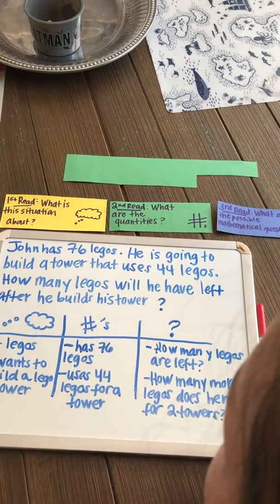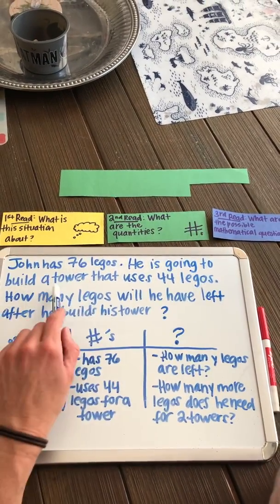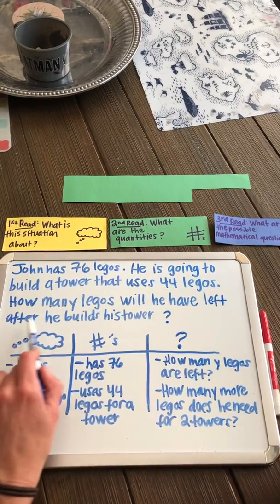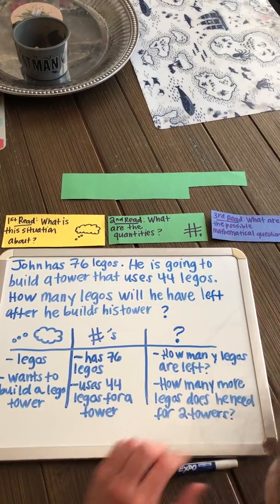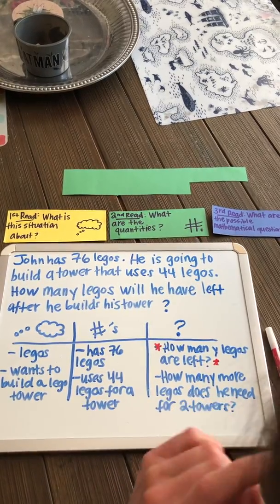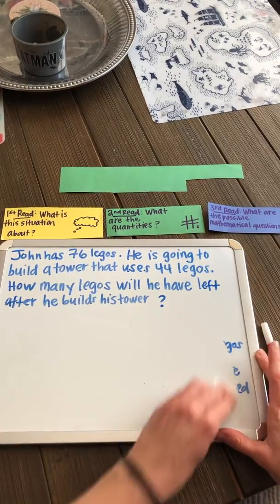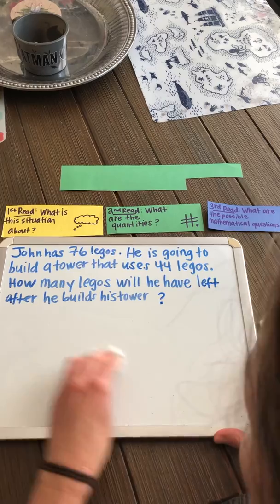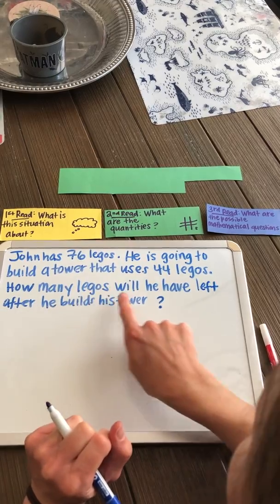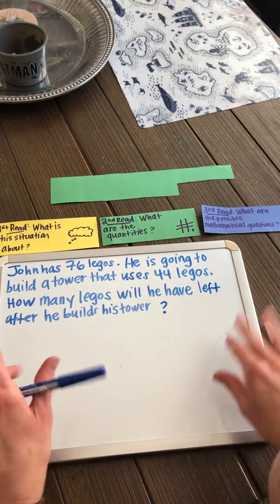I've uncovered the question, so let's read it again. John has 76 Legos. He is going to build a tower that uses 44 Legos. How many Legos will he have left after he builds his tower? I was thinking about that question already. I know I'm going to be adding or subtracting. Adding means to combine or join. Subtraction means to take away or compare. So I need to think about whether I'm combining Legos or taking away Legos to figure out how many are left.